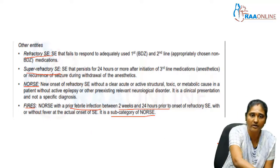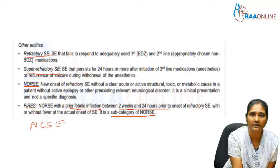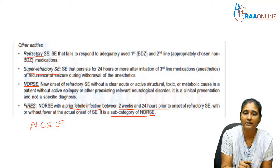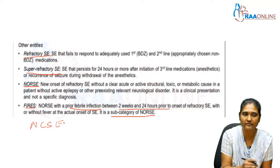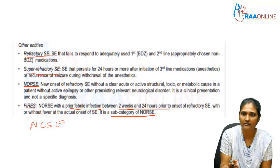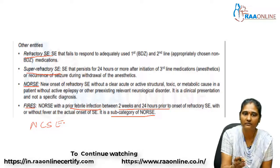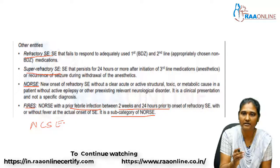One more important entity is non-convulsive status epilepticus, or NCSE. It manifests as a confusional state, dementia, hyperactivity, behavioral problems, or fluctuating levels of impaired consciousness. This should be considered when you see a child in the emergency who is unresponsive and encephalopathic — you have to think about non-convulsive status epilepticus. These are the various terminologies under the context of status epilepticus.